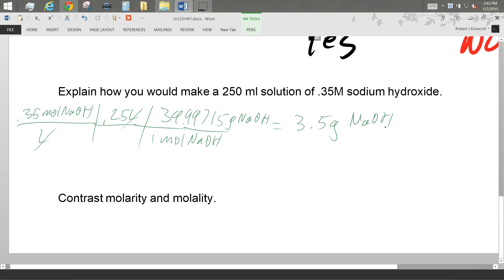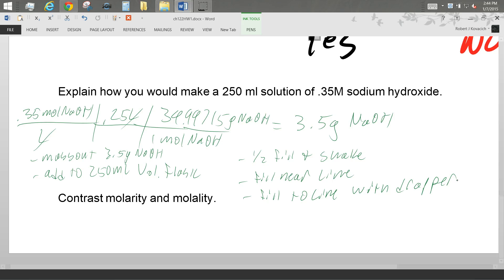So that's the only part of this question. I wanted you to tell me exactly how to make this. So I'd mass out 3.5 grams NaOH, add to 250 milliliter volumetric flask, half fill, and shake. Fill near line, and then fill to line with a dropper. And that's what you guys are going to be doing today.